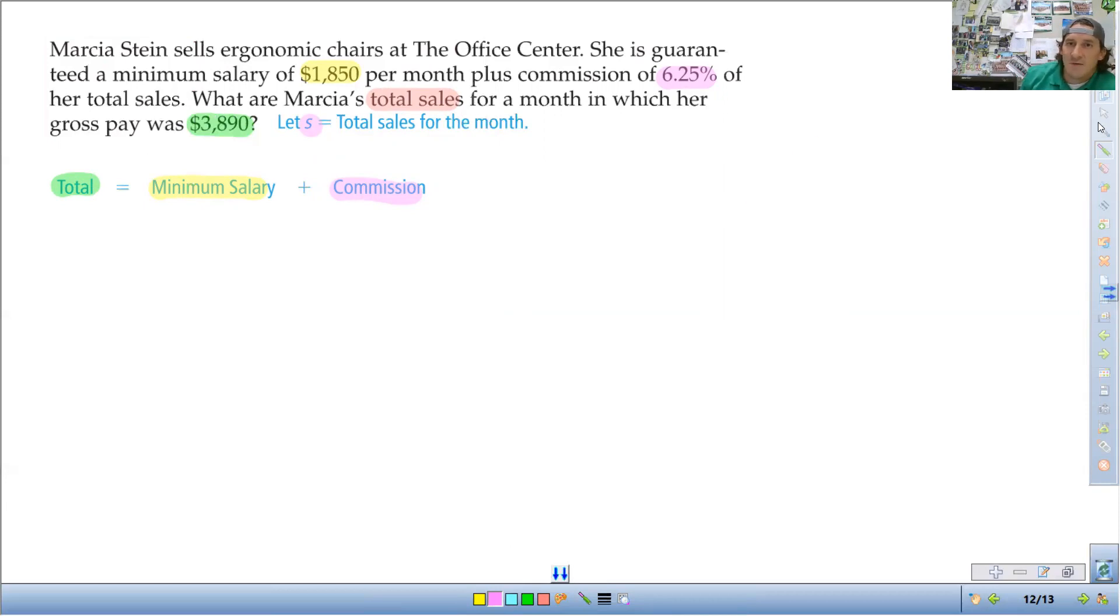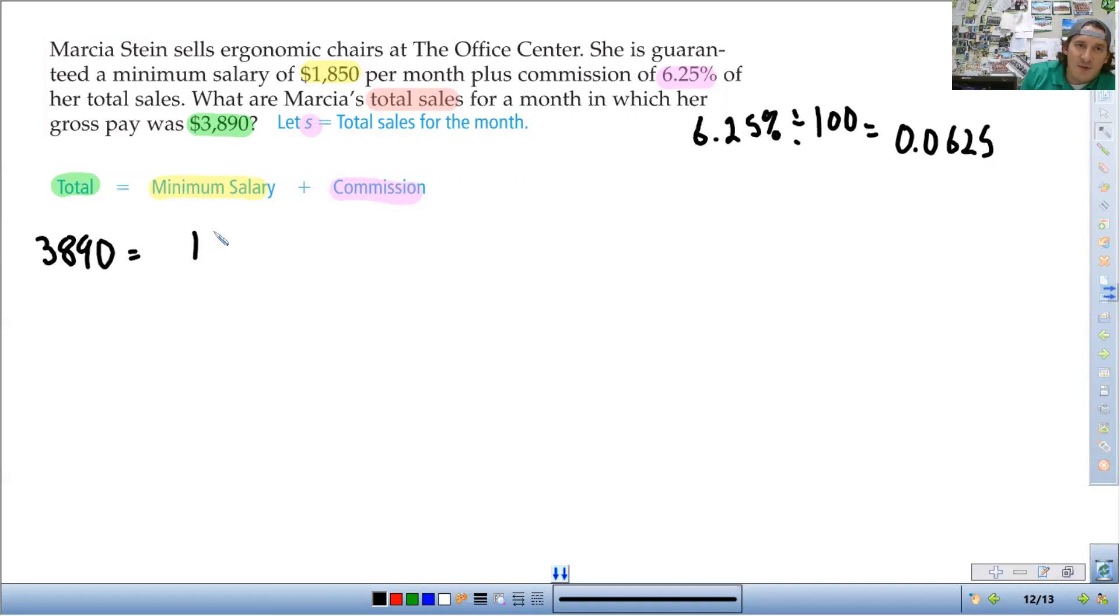And then we're going to do the commission rate times S for her sales. We're going to use S for sales in there. So first thing I'm going to do, before we even get there, I'm going to convert my percent to a decimal by dividing by 100. So this comes out to 0.0625. So the total, $3,890, is equal to her minimum salary of $1,850 plus her commission rate times the total sales.